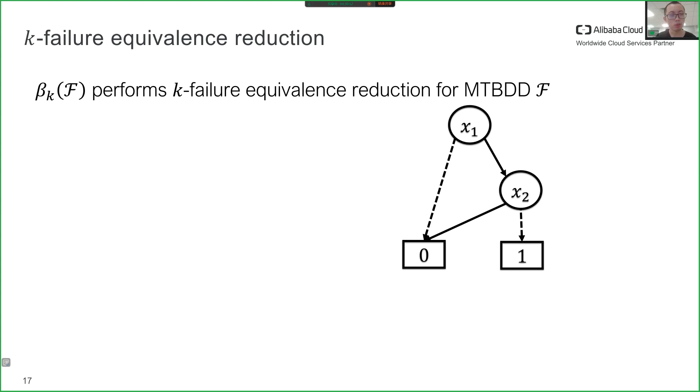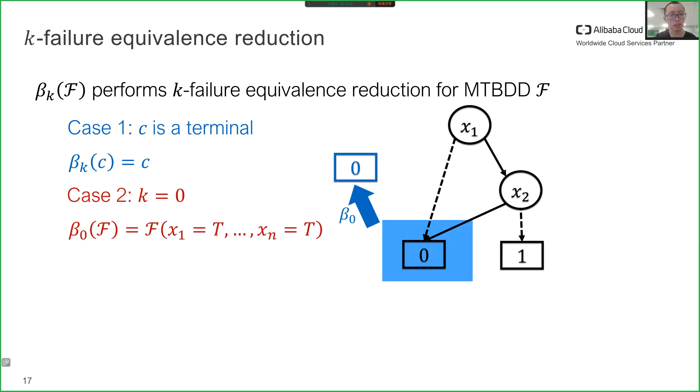Formally, we use beta k f to denote the result of the k failure equivalence reduction for MTBDD f. First, if c is a terminal, k failure equivalence reduction does nothing, as shown by the blue arrow in the example. Second, zero failure equivalence reduction always results in a terminal since no more failures are allowed. This is shown by the red arrow in the example.